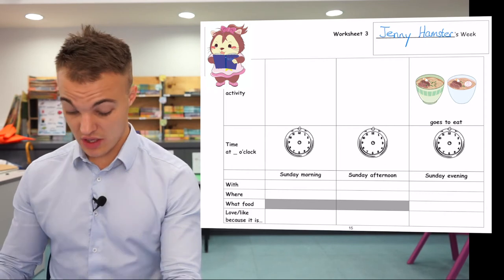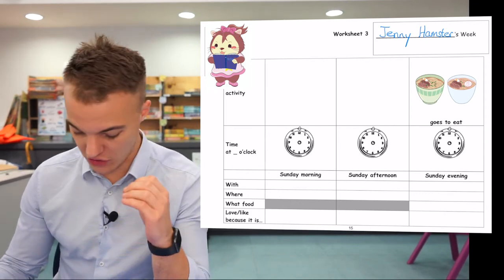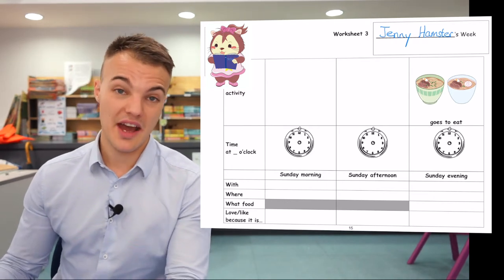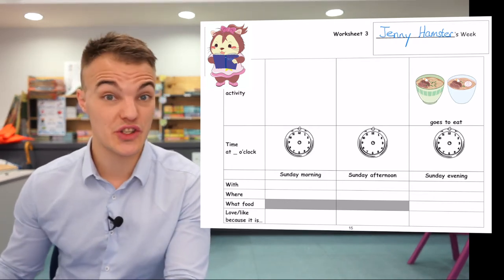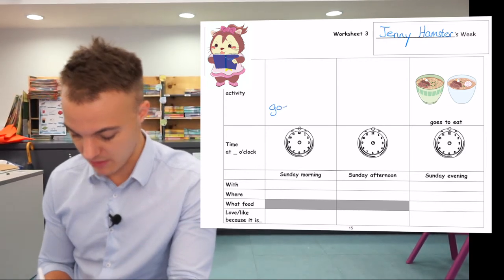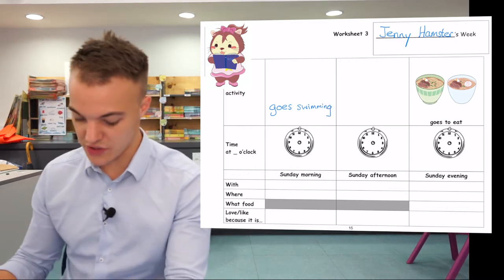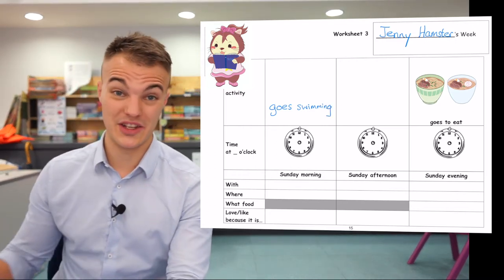I need to decide what does Jenny Hamster do on Sunday morning. I think Jenny Hamster goes swimming. So I can write goes swimming here, and I can draw a picture too.